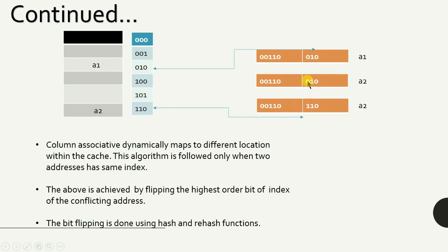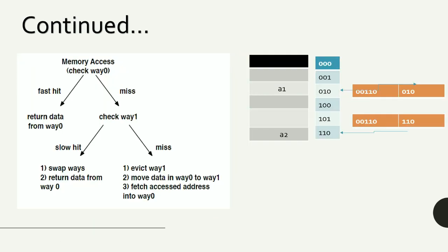I won't go into detail on the hash or rehash functions as that is a separate topic, but I wanted to show how bit flipping is done in column associative caches. As mentioned earlier, the column associative cache maintains the fast hit time of direct map caches and also lowers the miss rate compared to two-way set associative caches.